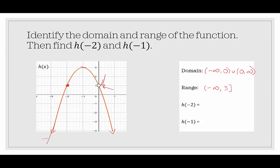For h of negative 2: at x equals negative 2, the point is negative 2 comma 1, so h of negative 2 is 1. For h of negative 1, that point is up at 3, so h of negative 1 is 3. This has been a demo on domain and range of functions and evaluating at specific points when given the graph. Thank you for stopping by.